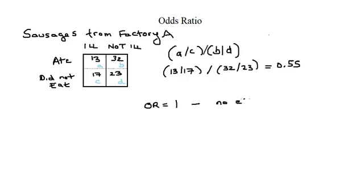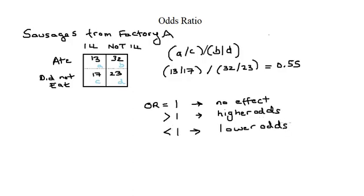Very basically an odds ratio of 1 means there's no effect. Greater than 1 it's a higher chance there was an effect and below 1 we have lower odds.